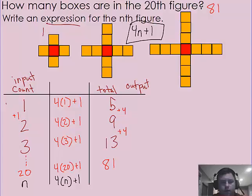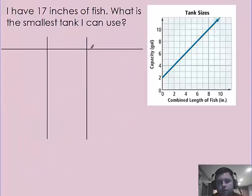Okay, last example. So this is a graph here. And if I have seventeen inches of fish, what is the smallest tank I can use to fit these fish in? So I'm looking at this graph. And on the x-axis is our combined length of fish in inches. And on the y-axis is our capacity of the tank in gallons.